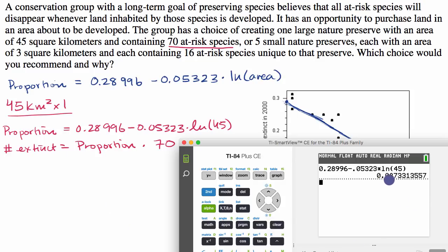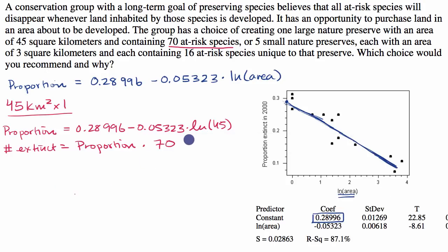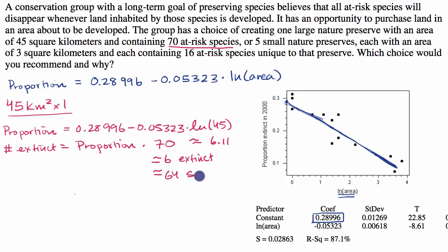The proportion comes out to almost 9%. Multiplying by 70 species gives approximately 6.11. So for the large island, we would have approximately 6 species extinct and approximately 64 species saved.